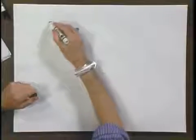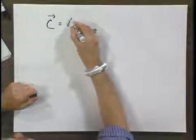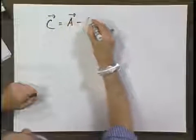I now want to discuss the subtraction of vectors. If we have the same vectors A and B, and C now equals A minus B,